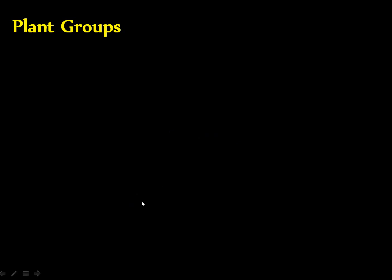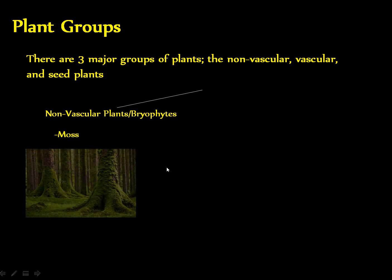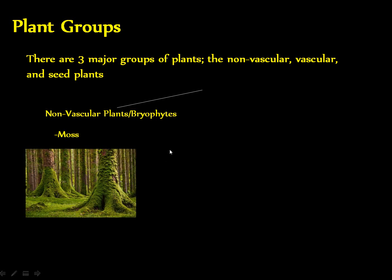There are three major plant divisions: the vascular, non-vascular, and seed plants. First, we have the non-vascular plants, also called the bryophytes. Generally speaking, bryophytes do not have true xylem or phloem, which are types of vascular tissue. When people speak about bryophytes, they are usually talking about moss.